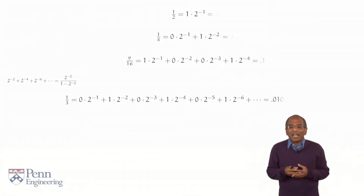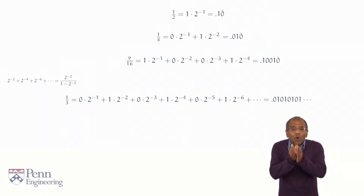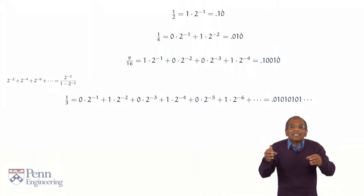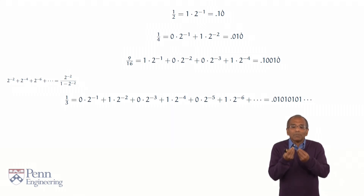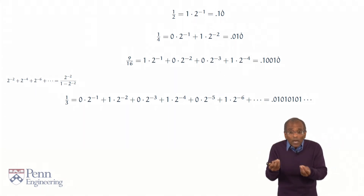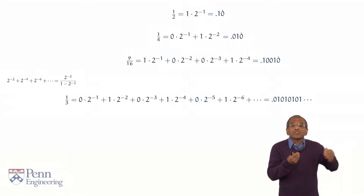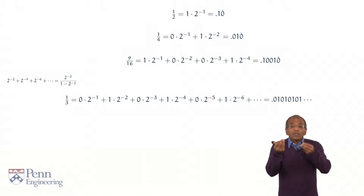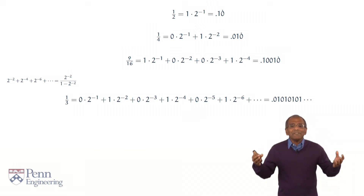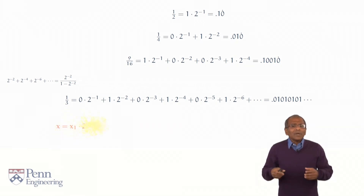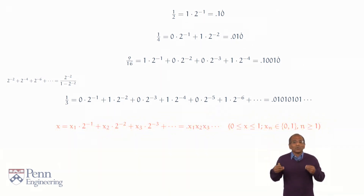Therefore, in a base-two expansion, we could write one half more compactly as point one followed by an infinite string of zeros — meaning one times two to the power minus one. One quarter is point zero one followed by an infinite string of zeros, meaning zero times two to the power minus one plus one times two to the power minus two. Similarly, nine sixteenths is point one zero zero one followed by an infinite string of zeros. These are all terminating expansions. One third turns out to be of the form point zero one zero one zero one, recurring indefinitely. This is just a different base representation for real numbers.